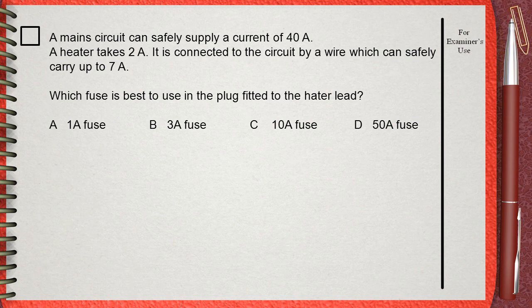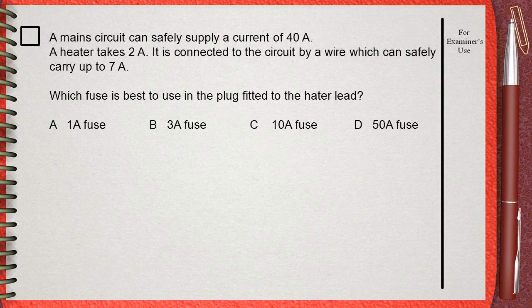A main circuit can safely supply a current of 40 Amperes. A heater takes 2 Amperes. It is connected to the circuit by a wire which can safely carry up to 7 Amperes.